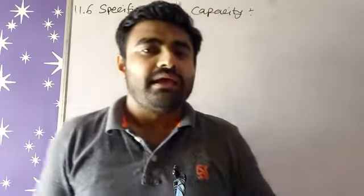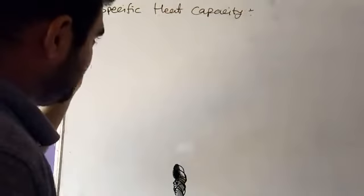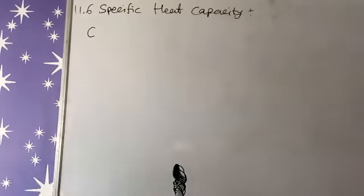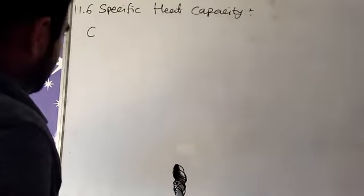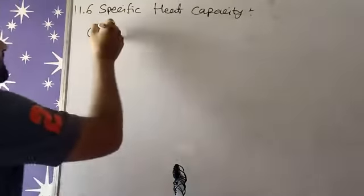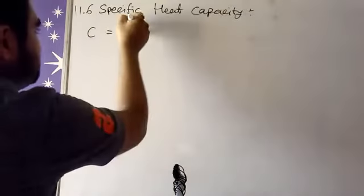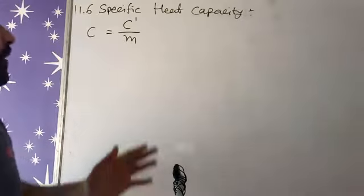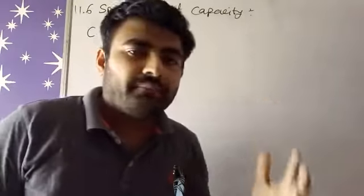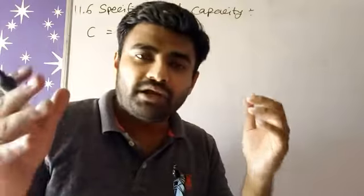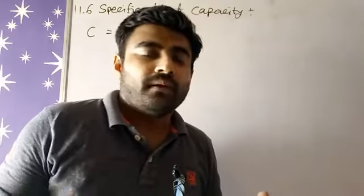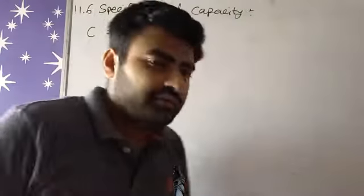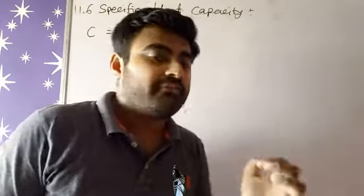If we formulate it here, specific heat capacity is denoted by small c and that c is equal to simple heat capacity upon mass of the substance. So here we have normal heat capacity with no particular mass, but here we have particular mass. We have to take that specific heat capacity. If we see this definition: